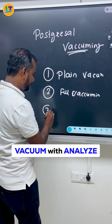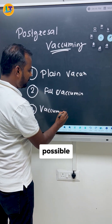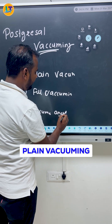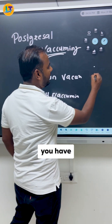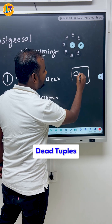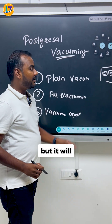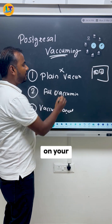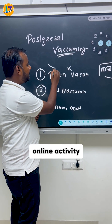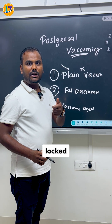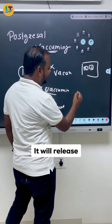In plain vacuuming, whatever dead tuples you have, those dead tuples can be reused again to insert your data, but it will not release the space at the operating system level. This is an online activity — your table will not be locked.